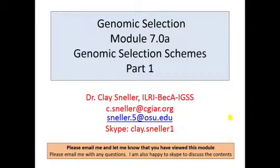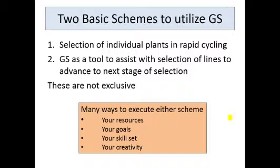Hello and welcome to Module 7 of the class on genomic selection. In this module we'll be talking about genomic selection schemes that can be implemented in plant breeding. There are two basic schemes to utilize genomic selection. The first one is selection among individual plants based solely on their genotype, in what can be termed a rapid cycling genomic selection scheme. You can also use genomic selection as a tool to assist with selection of lines to advance to the next stages of evaluation in your field trials.